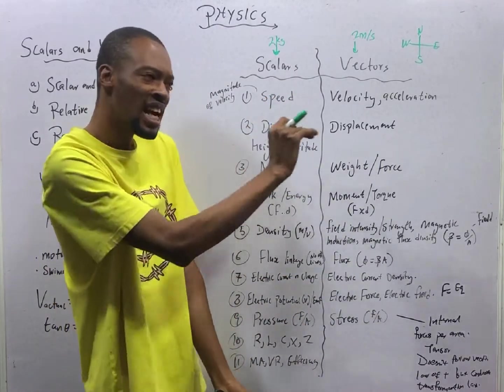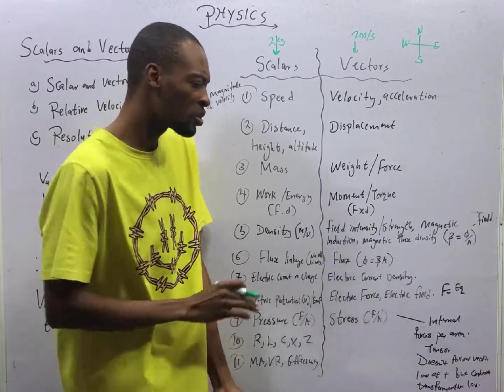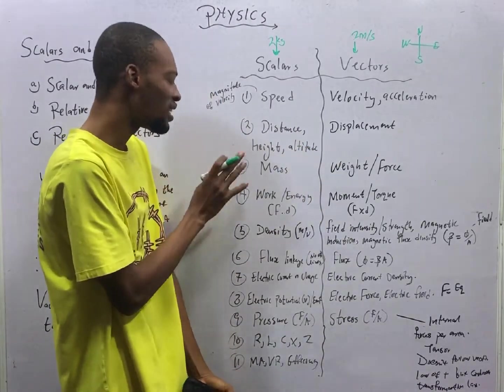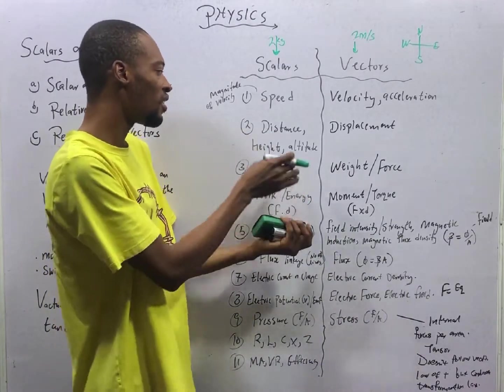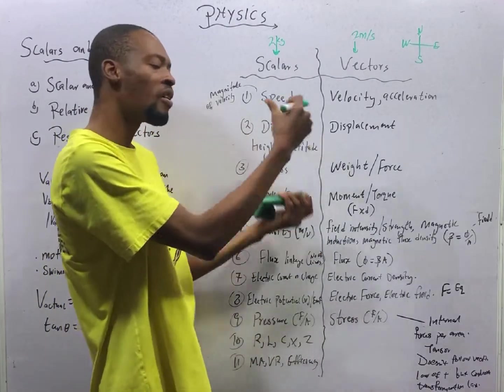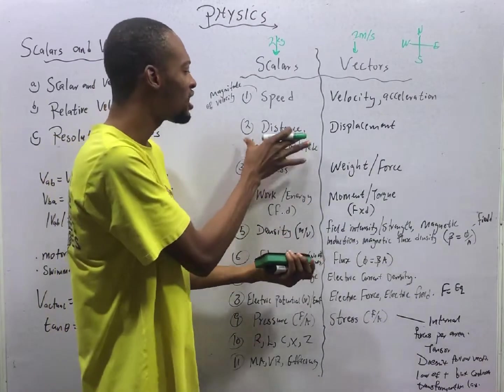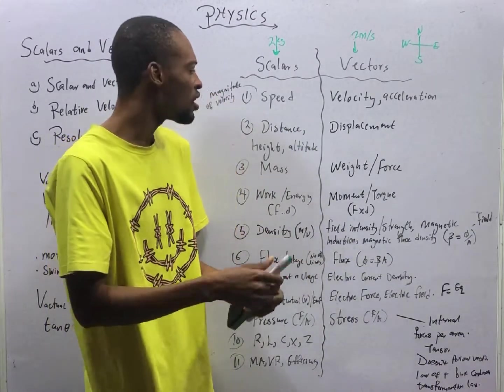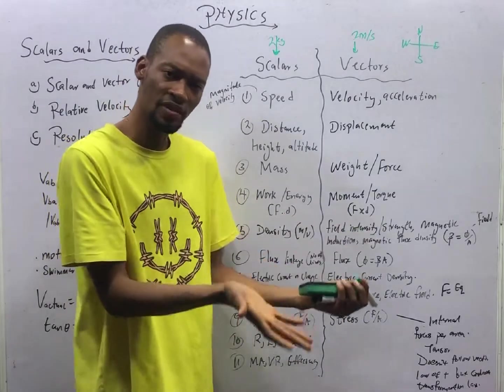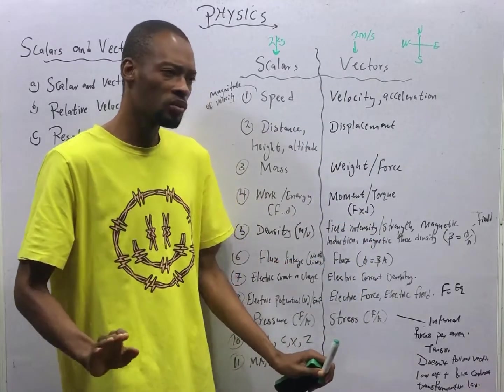Speed is distance over time. While distance is the ground covered by an object. The total ground you move from here to here to here. The total area you cover is the distance. Height and altitude all refer to distance. In describing these, we are not concerned about the direction. Just tell us, is the distance 2 kilometers? Is it 5 meters? That is all.